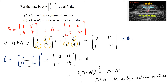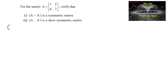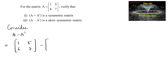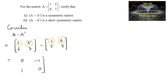Now let us find the second part: A minus A transpose. A minus A transpose equals [[1,5],[6,7]] minus [[1,6],[5,7]], giving us: 1-1=0, 5-6=-1, 6-5=1, and 7-7=0. So A minus A transpose equals [[0,-1],[1,0]].